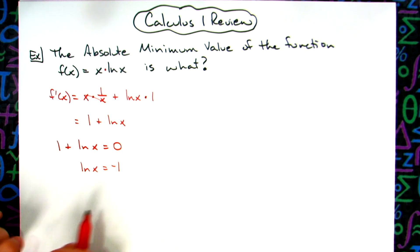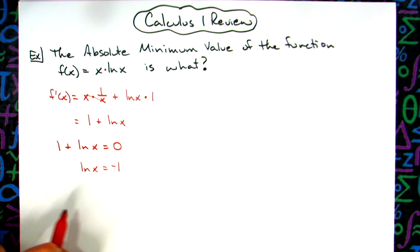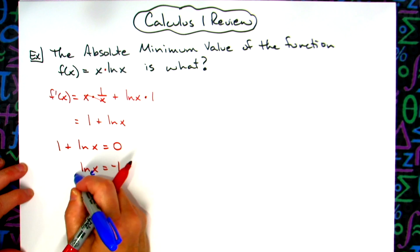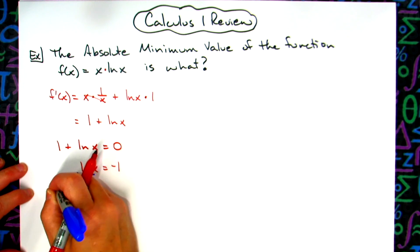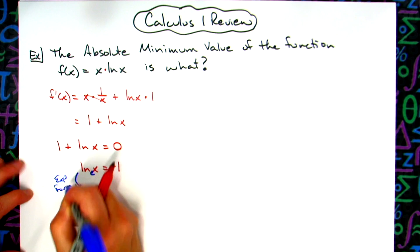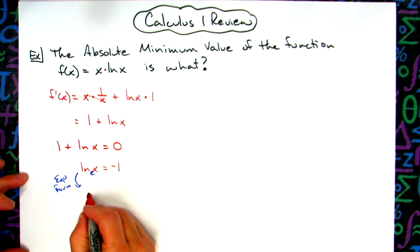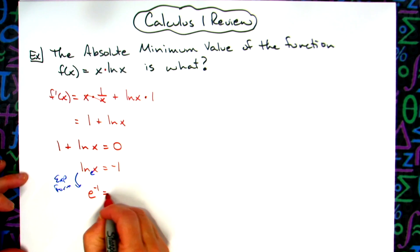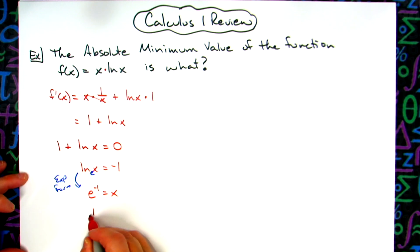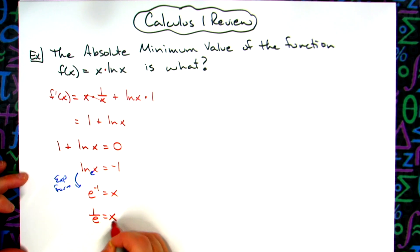Now I need to solve this equation. The natural log of x has a base of e, so I'm going to switch into exponential form. So e to the negative 1 equals x, and getting rid of that negative exponent, I'll have 1/e equals x.